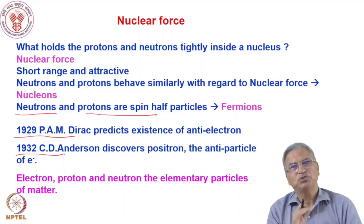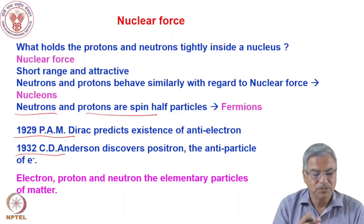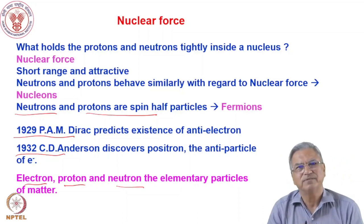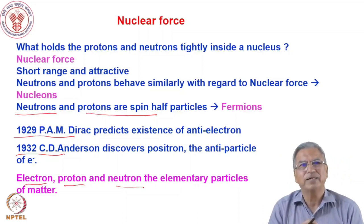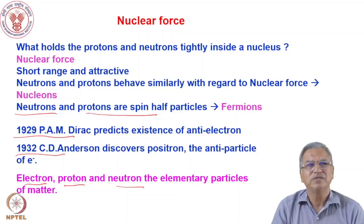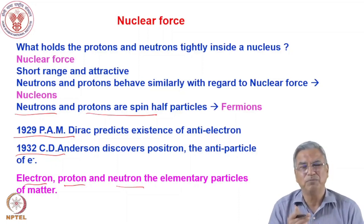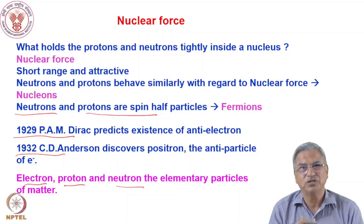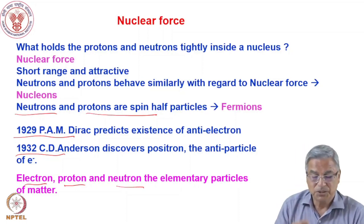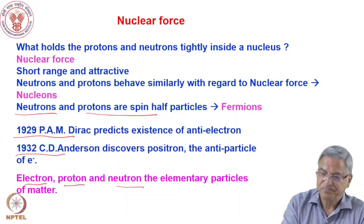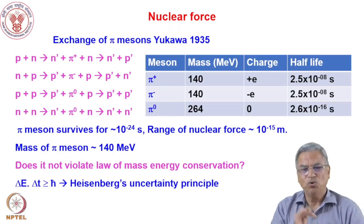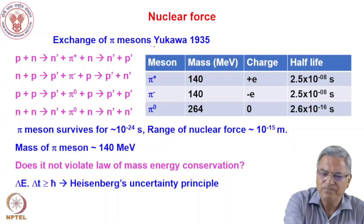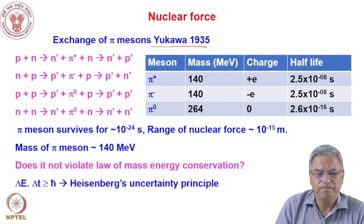Till now, what we have understood is that any matter is composed of electron, proton, and neutron. Therefore, we say these three particles are the elementary particles of matter — the fundamental constituent building blocks of all matter. In 1935, Yukawa gave the exchange theory of pi mesons.